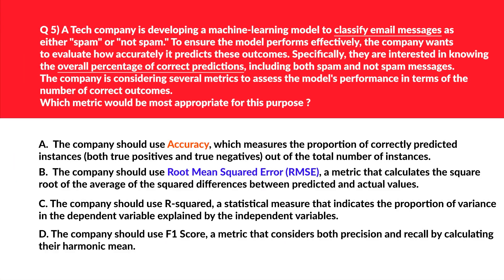Now let's look at some real-world classification questions — you might have received spam messages if you use email, so this is a real-world implementation. Option A says the company should use accuracy, which measures the proportion of correctly predicted instances — both true positives and true negatives — out of the total number of instances. Accuracy directly measures the overall percentage of correct predictions, so let's park this. Option B says use RMSE (Root Mean Squared Error) — a metric that calculates the square root of the average of the squared differences between predicted and actual values. RMSE is used for regression tasks and not for classification tasks like spam detection.